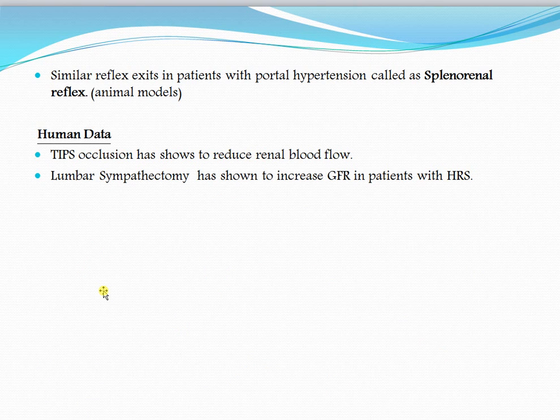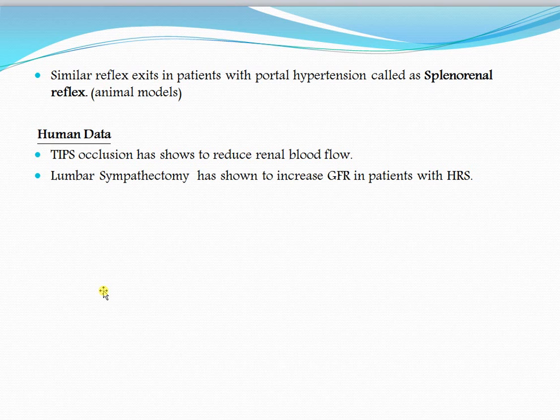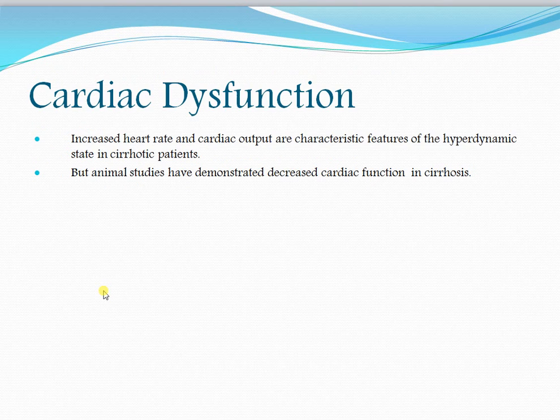A similar reflex has been demonstrated in portal hypertension called the splenorenal reflex. Translating to human data: when TIPS — transjugular intrahepatic portosystemic shunt — occlusion occurs, renal blood flow is reduced. Conversely, lumbar sympathectomy increases GFR by cutting the efferent arm of the hepatorenal reflex to the kidneys.